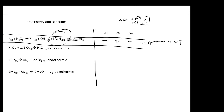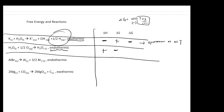The second equation is an endothermic reaction, so ΔH is positive. Since gas molecules appear only on the reactant side, ΔS is negative. With ΔH positive and -TΔS also positive, ΔG will always be positive — the reaction is not spontaneous at any temperature.